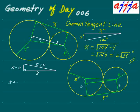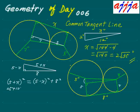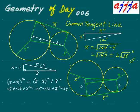Applying the Pythagorean theorem: (5 + x)² = (5 − x)² + 8². Expanding: 25 + 10x + x² = 25 − 10x + x² + 64. Simplifying — 25 cancels with 25, x² cancels with x² — and moving −10x to the left gives 20x = 64.